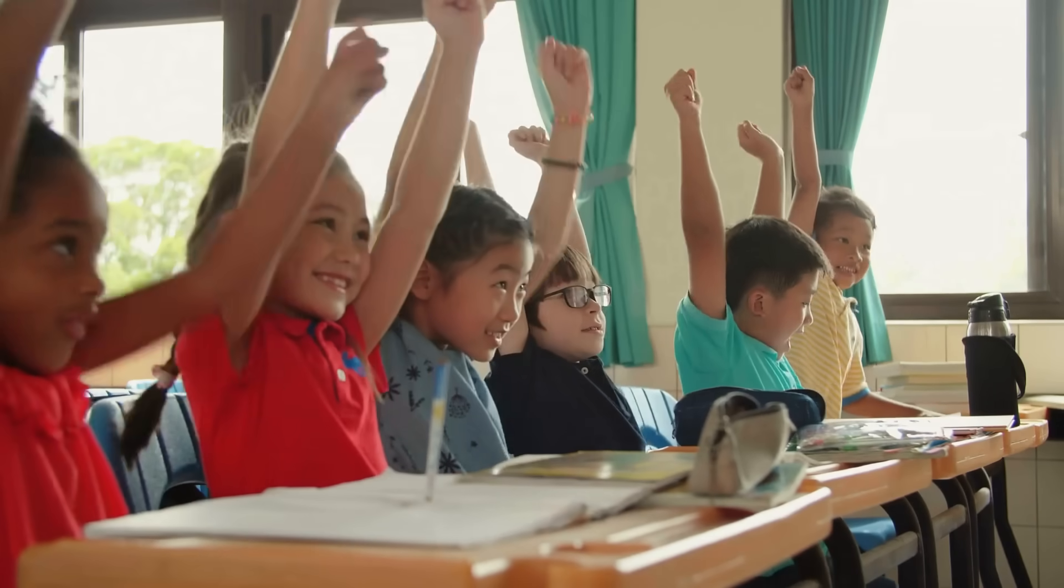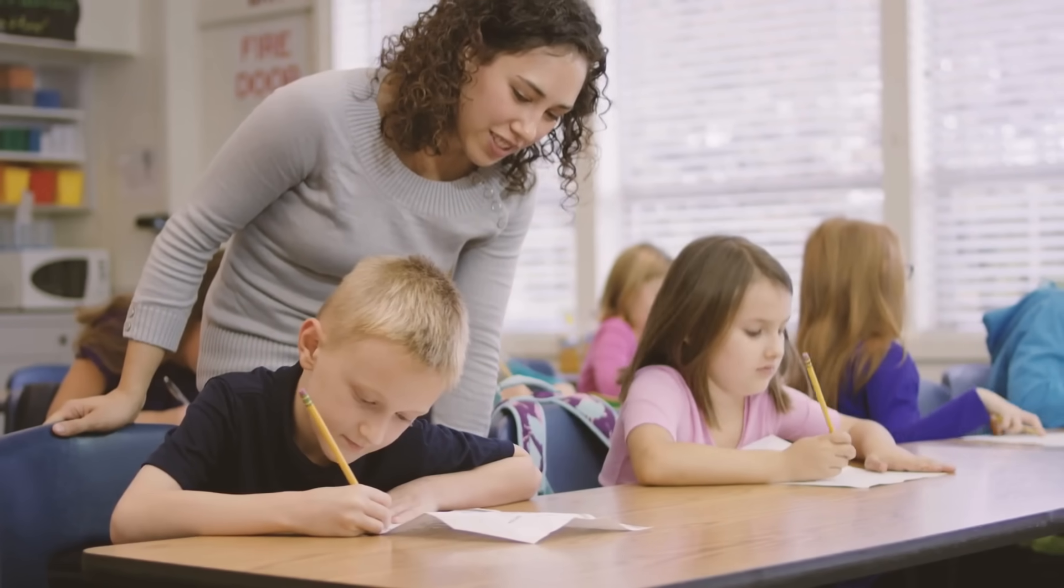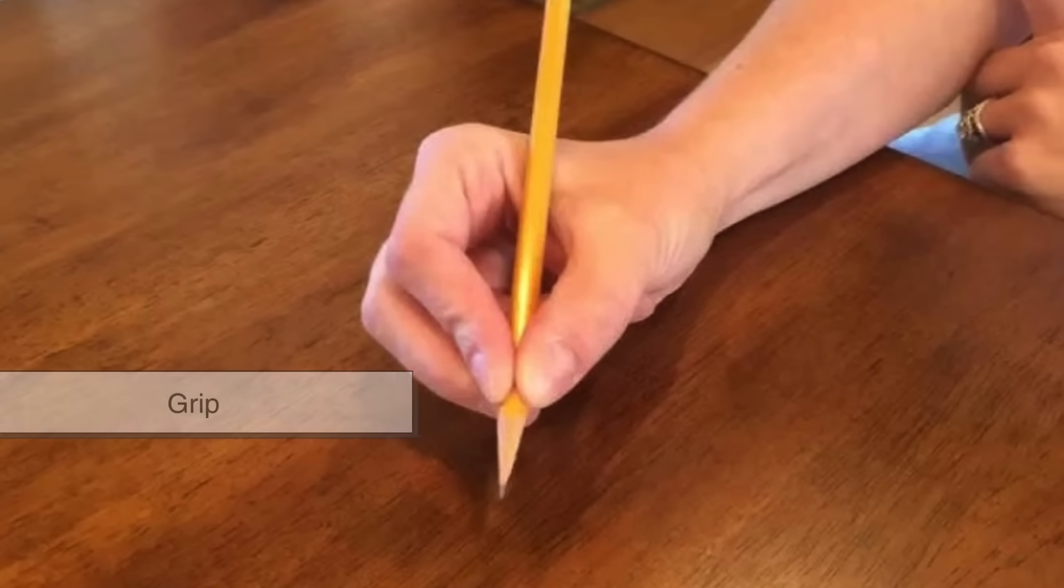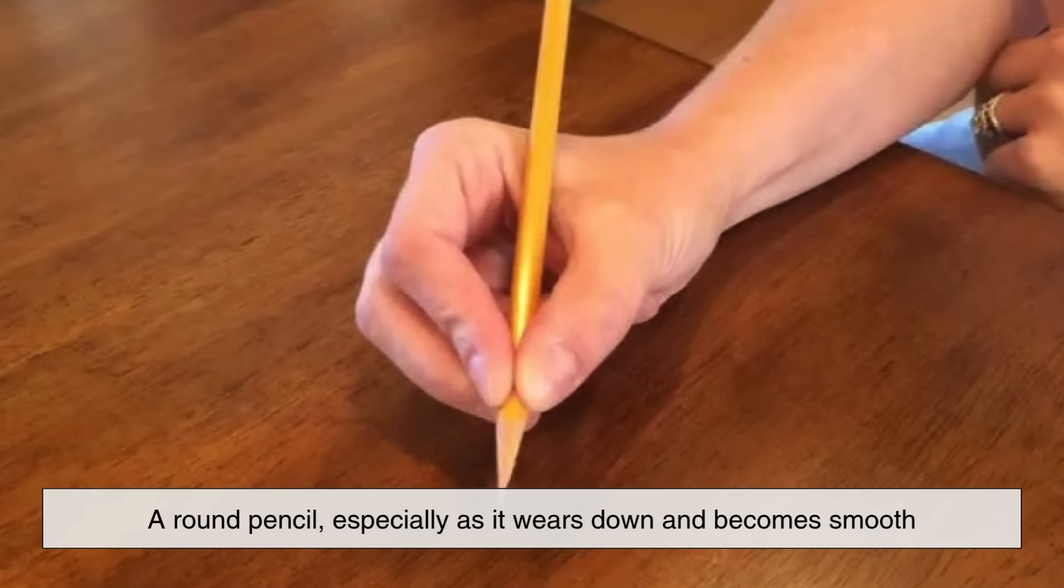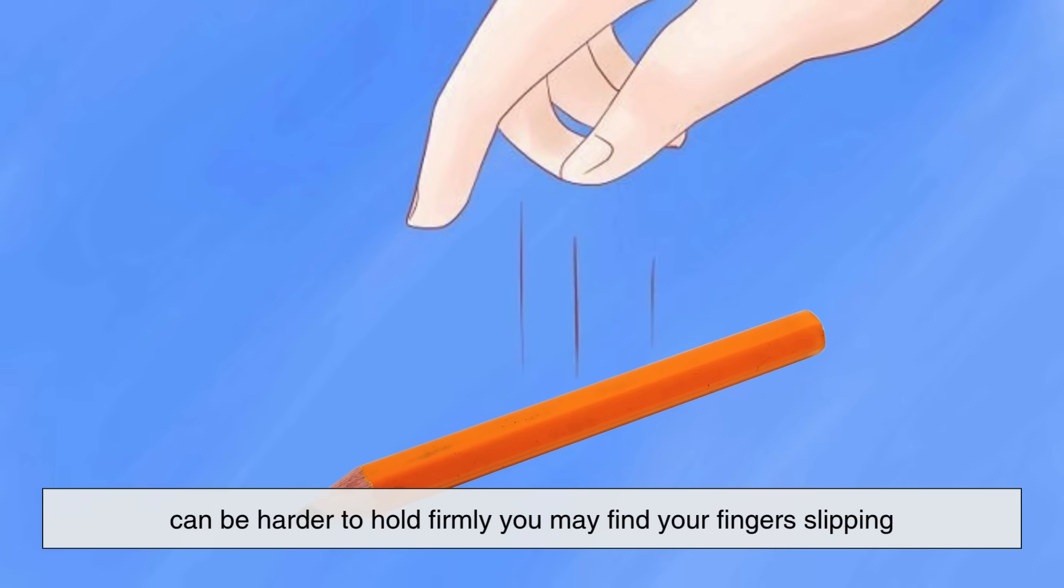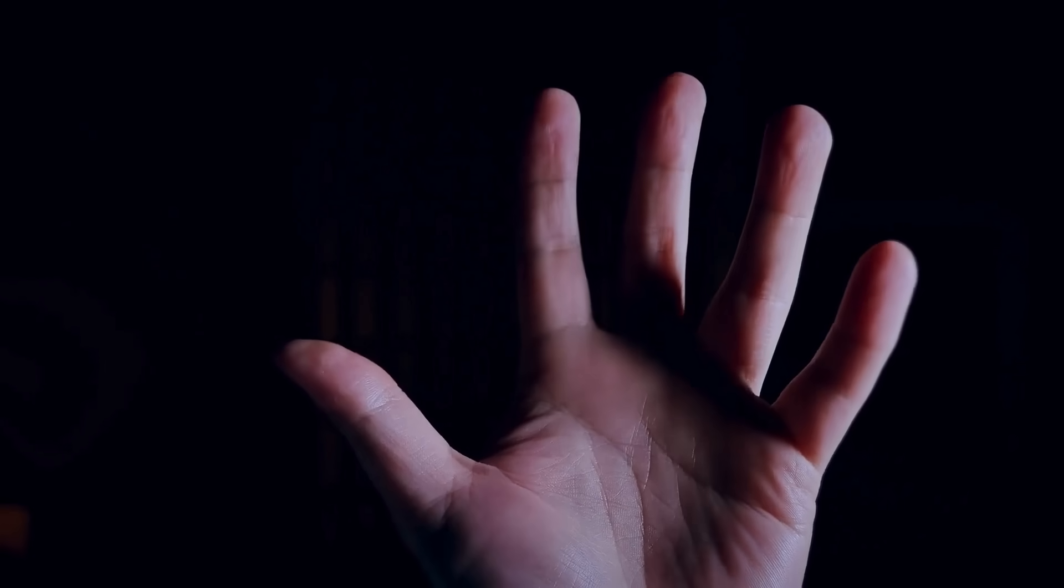This becomes especially annoying in classrooms or studios where dozens of people might be using pencils at the same time. The second issue is grip. A round pencil, especially as it wears down and becomes smooth, can be harder to hold firmly. You may find your fingers slipping or feel your hand cramping after extended use.